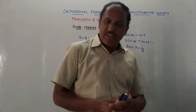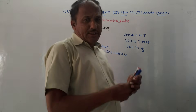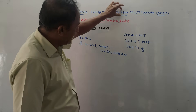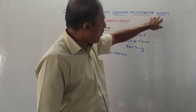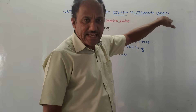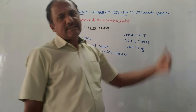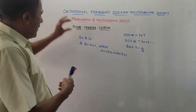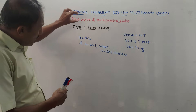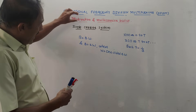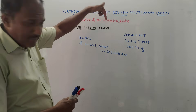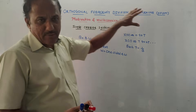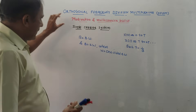Hello and welcome back to this channel. Dear students, this topic is orthogonal frequency division multiplexing, that is OFDM. It is one of the multiplexing techniques used for cellular networks. We will discuss the motivation and the multi-carrier basics — why to use this OFDM system and so on.